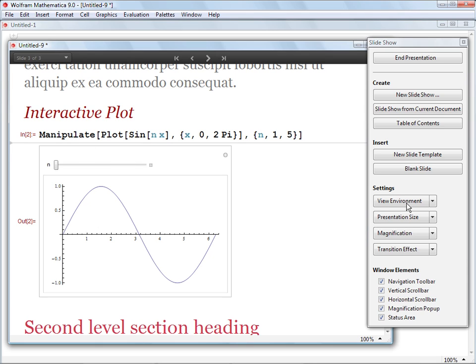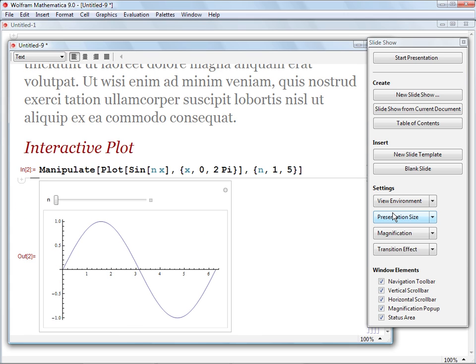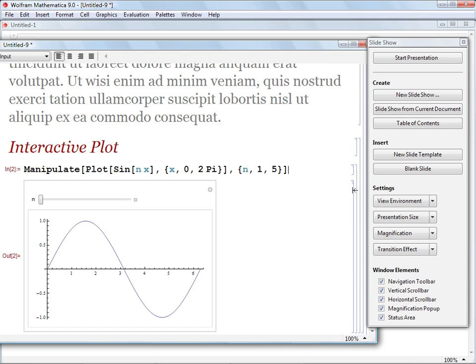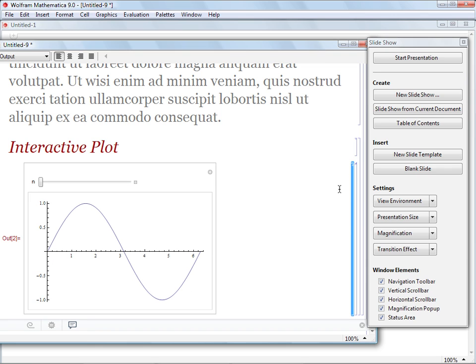To fix these things, first return to Authoring Mode by clicking the Working Environment from the View Environment drop-down. Double-click the cell bracket containing the plot to hide the command that was used to create it.